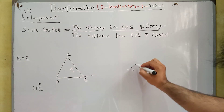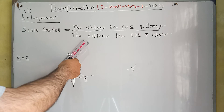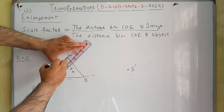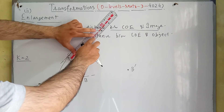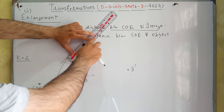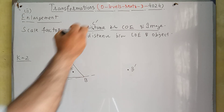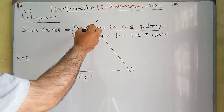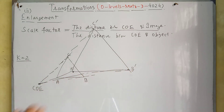This will be B-dash. The distance between point C and the center of enlargement is approximately 18.5 centimeters, so if we double 18.5 centimeters we get the position of C-dash. This is 18.5 centimeters, so this will be the image of C. Now we join these three image points — this will be our enlargement. We can see that this is the object and this is the image.